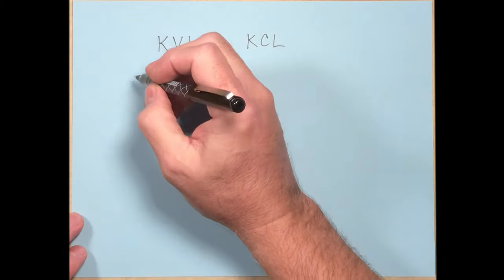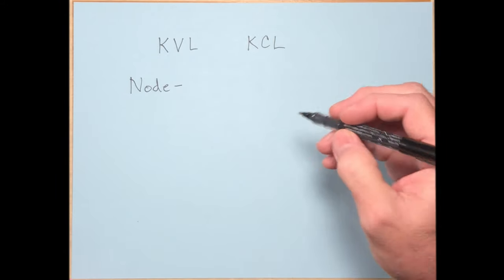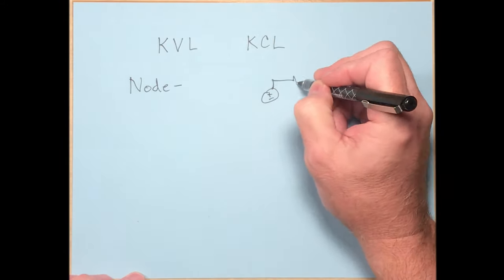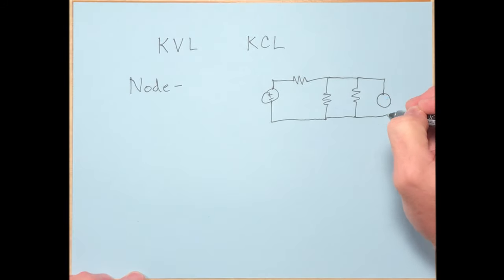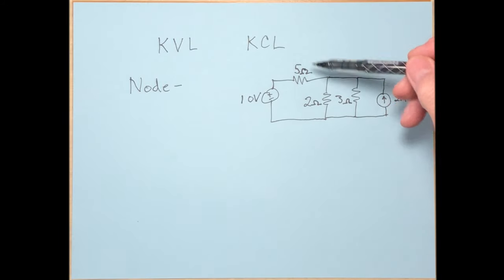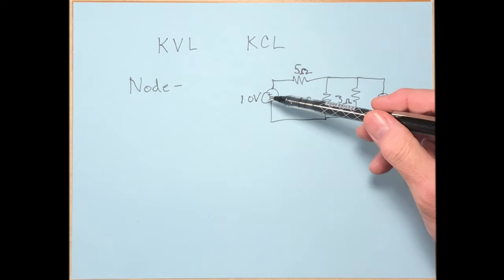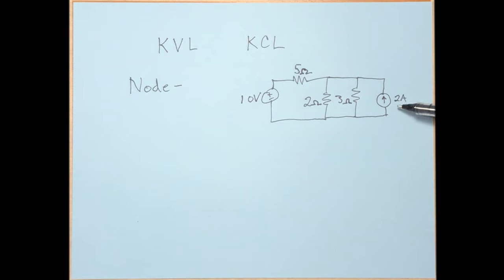A node is a really straightforward concept when it comes to circuits. A node is the point of connection between any two or more elements. Let's draw a circuit we can use as an example. Here we have a simple circuit with three resistor elements — a 5, 2, and 3 ohm — and two sources: a 10-volt voltage source and a 2-amp current source. A node is where any two or more elements connect up.